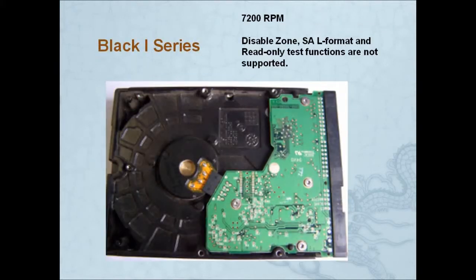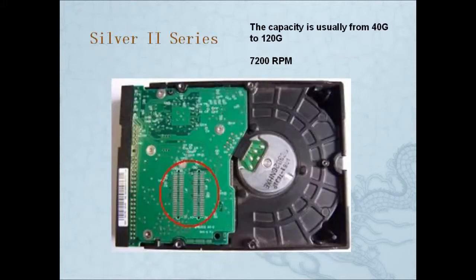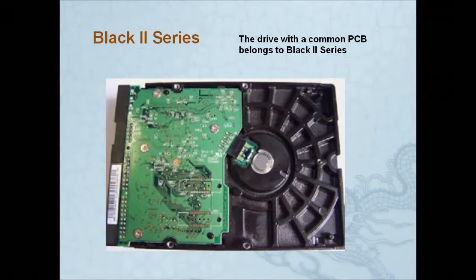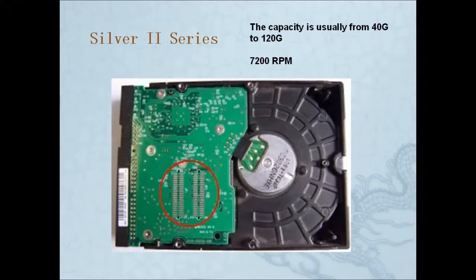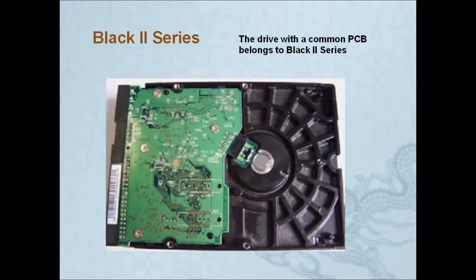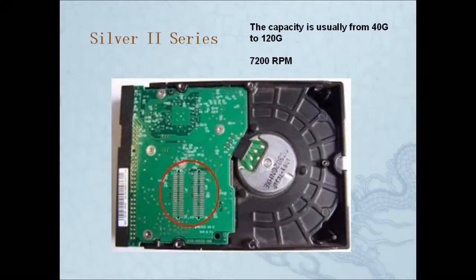Now let's look at Black 1. Black 1 has a slightly different PCB shape — it looks like a fat L. That shape difference distinguishes Black 1 from the Silver series. Black 2 is similar, but the difference between Silver 2 and Black 2 is that there are no PCB marks like the ones on Silver 2.